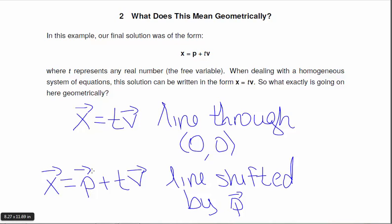So this is kind of what's going on here. A homogeneous system is going to be a line that passes through the origin. If it's not homogeneous, it'll be a line shifted from the origin.